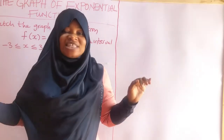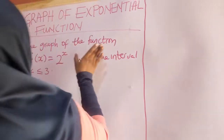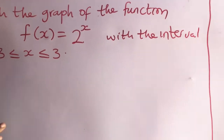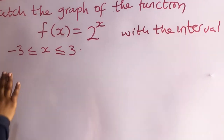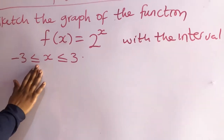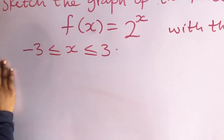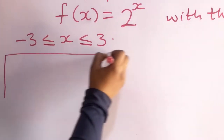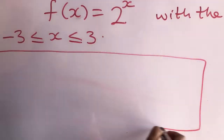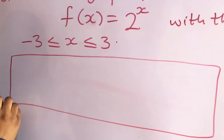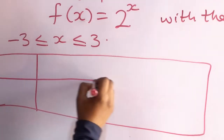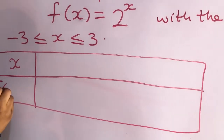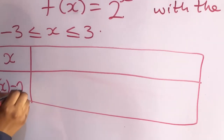So let's sketch the graph of the function f(x) = 2 raised to the power x, with the interval minus 3 less than or equal to x less than or equal to 3. The next thing is that we have to draw a table for x and f(x), which is equal to 2 raised to the power x.